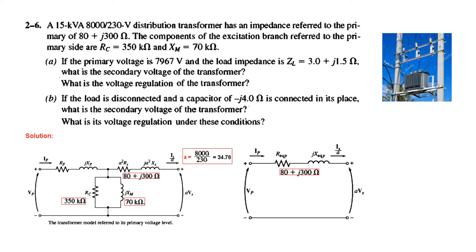This is the simplified circuit that we will be using to solve this problem. We are given that the primary voltage is 796 volts and the total load impedance has a specified value. We have to find the secondary voltage of the transformer. Remember, this voltage after transformation is A times V_s, because V_s is on the secondary side; when we move to the primary side we multiply by the turns ratio. So we have to find the secondary voltage V_s, and then we have to find the voltage regulation.